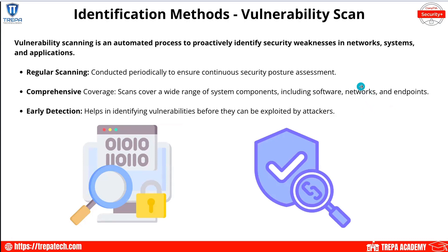Starting with identification methods: vulnerability scanning. The number one thing we're going to do to find vulnerabilities within our network is scan. This could be as simple as a network scan using NMAP or Nessus, or it could be a credentialed in-depth scan that covers third-party apps on our operating systems. Vulnerability scanning as a whole is an automated process to proactively identify security weaknesses in networks, systems, and applications. There are different types of scanning depending on your priorities — network, system, or application scanning.